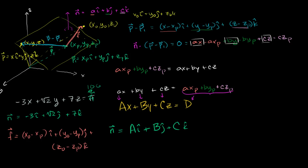What we want to find is this yellow distance — the distance if I were to take a normal off of the plane and go straight to the point, which is going to be the shortest distance. You can see it visually: we can form a right triangle where the base is along the plane and this side is normal to the plane, making a right angle. Any other point on the plane forms a hypotenuse, which is always longer. So the shortest way to get to the plane is this perpendicular distance.